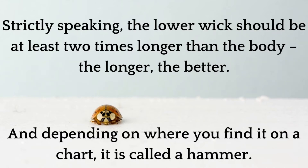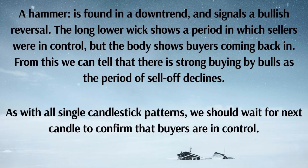Strictly speaking, the lower wick should be at least two times longer than the body — the longer, the better. Depending on where you find it on a chart, it is called a hammer. A hammer is found in a downtrend and signals a bullish reversal. The long lower wick shows a period in which sellers were in control.